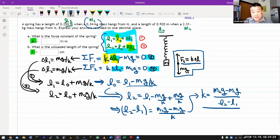Let's do a little sanity check. M2 is bigger than M1, so the numerator is positive. L2 is bigger than L1, so the denominator is positive. I'm going to get a positive answer, and that should give me the value of K in SI units.